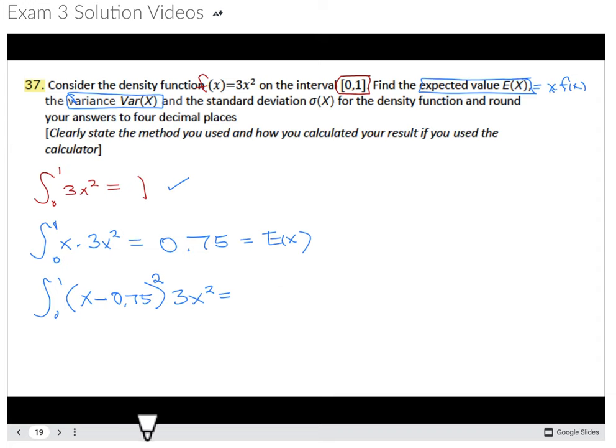And I guess let's do a check on the expected value, 3 fourths. Yeah, 0.75. More decimal places. That doesn't look like decimal places, 0.7500. So that's good.